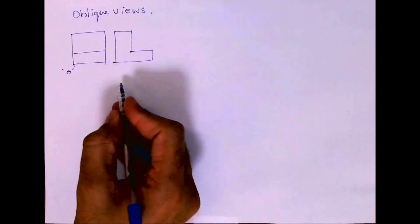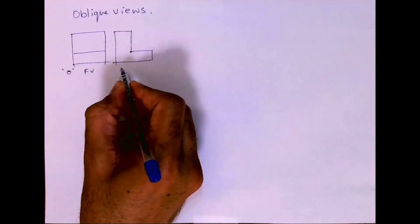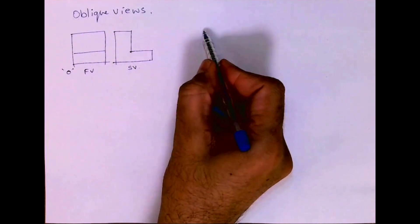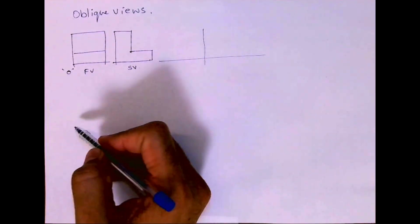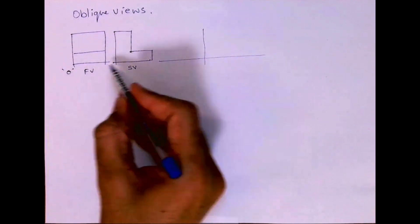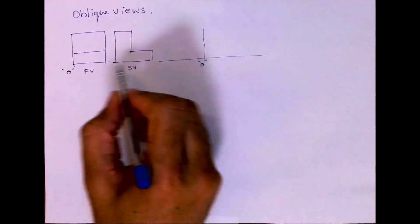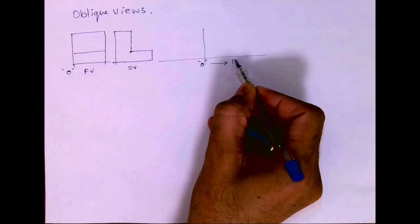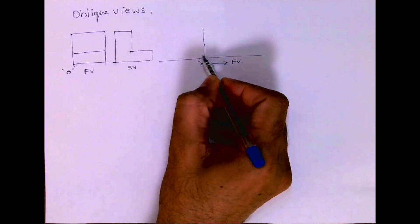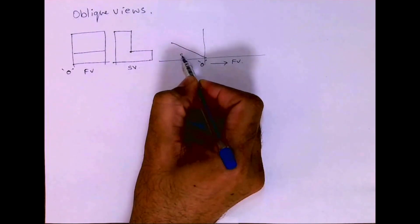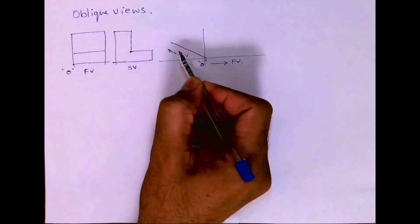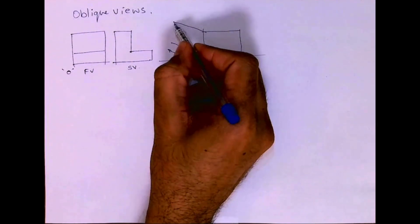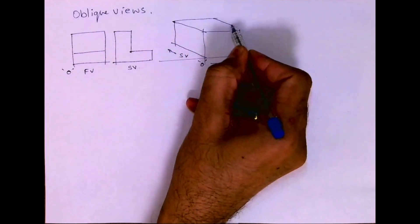We have two views, and in the exam they will give you front view and side view. You will draw a plus sign and mark the origin. The front view is on the right side, so you will draw the front view straight on the right side. The side view will be on the left side, drawn on an incline at the receding angle — that angle can be 30, 45, or 60 degrees.